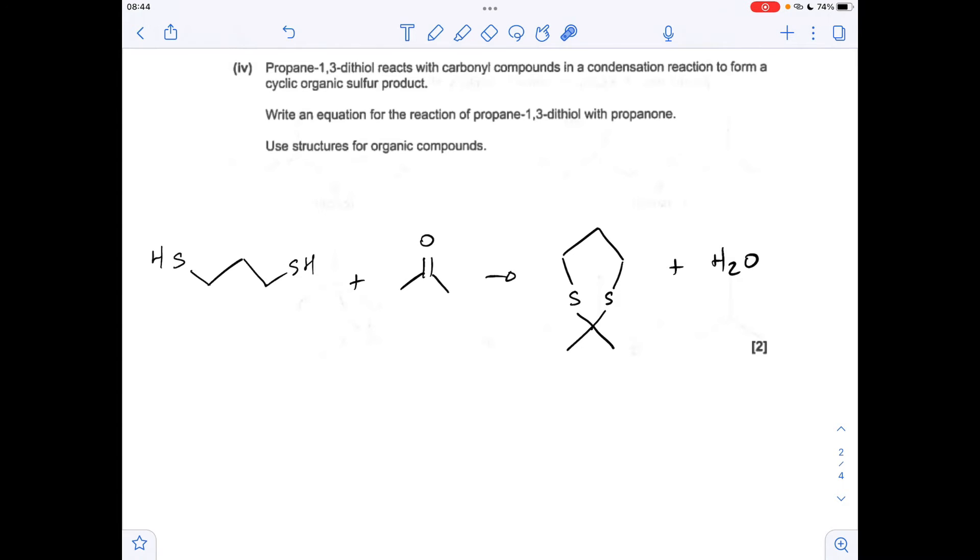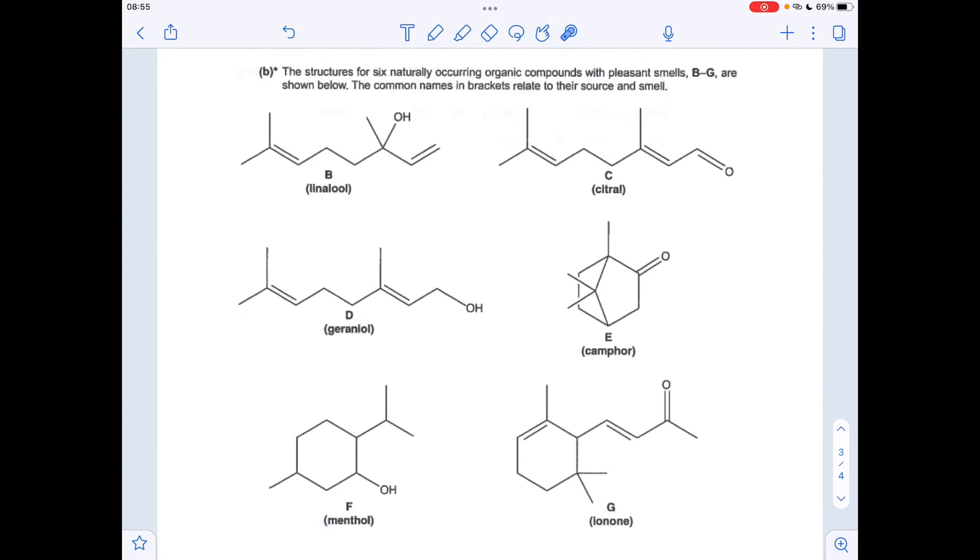Moving on to part B now, the first thing I want to do is identify all the functional groups in these six molecules. Okay, I'll quickly run through these. We've got alkene and a tertiary alcohol group in B, alkene and an aldehyde group in C, alkene and primary alcohol in D, just a ketone functional group in E, just a secondary alcohol group in F, and in G we've got alkene and ketone.